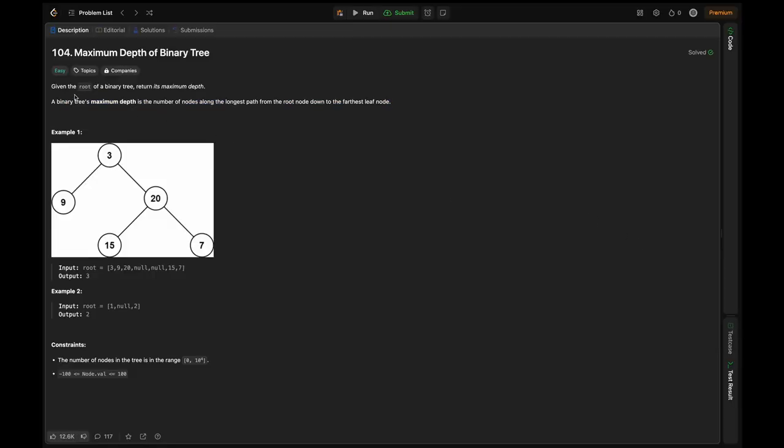The question is: given the root of a binary tree, determine its maximum depth. A binary tree's maximum depth is the number of nodes along the longest path from the root node down to the farthest leaf node. Basically, the maximum depth of a binary tree refers to the longest path from the root node to any leaf node. It's a fundamental concept in tree traversal and forms the basis for various tree-related algorithms.